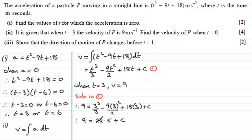So if I take 22.5 from both sides, I get 9 minus 22.5 is minus 13.5. So it follows then that c equals minus 13.5. So if I substitute this back into equation 1, we've got therefore v equals t cubed over 3 minus 9t squared over 2 plus 18t minus 13.5.